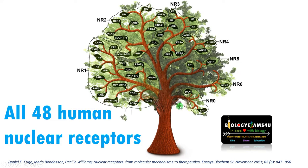This is a dichromatic representation — a tree of 48 human nuclear receptors. You can see nuclear receptor 6, ER alpha, ER beta, and others represented in this diagram.